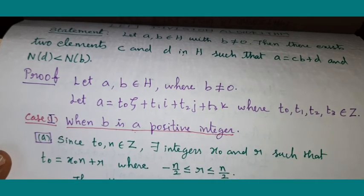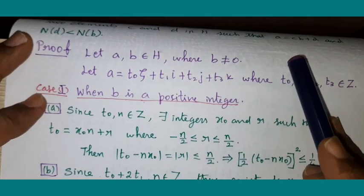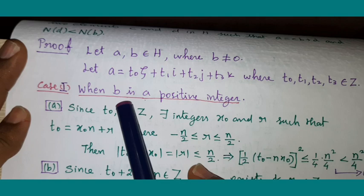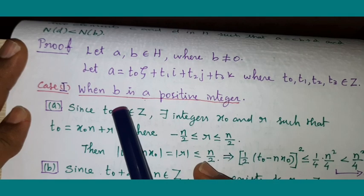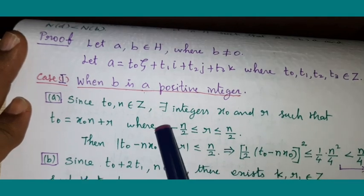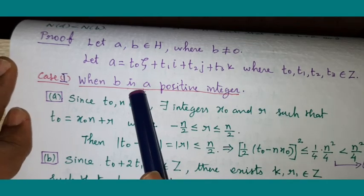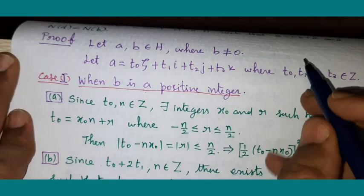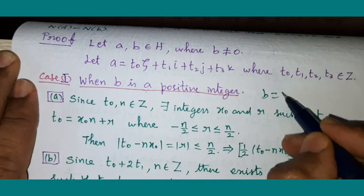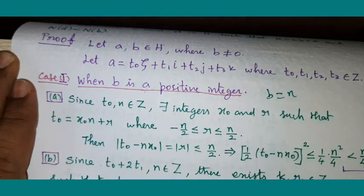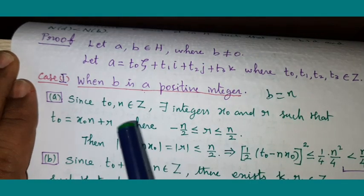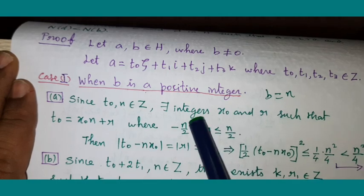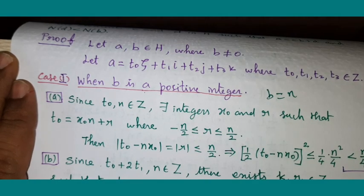Case 1: We take B as a positive integer — not a general Hurwitz quaternion, simply a positive integer. So we take B as N, meaning N is a positive integer. Now, since t₀ is also an integer and N is an integer, we can always find X₀ and R.